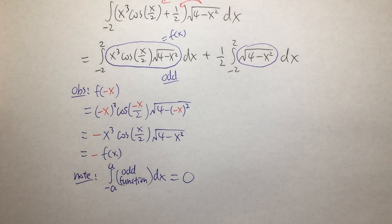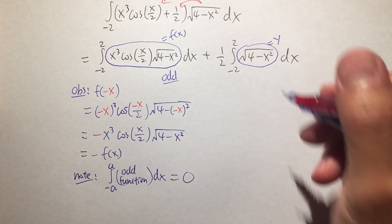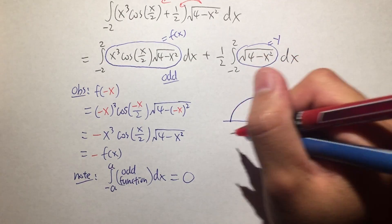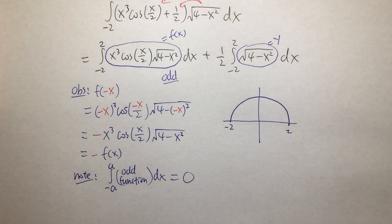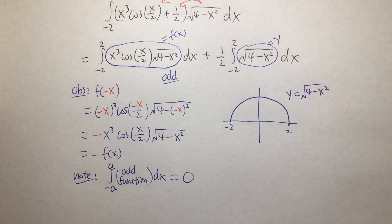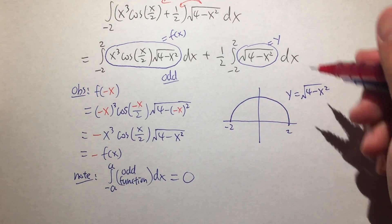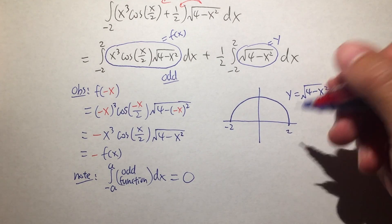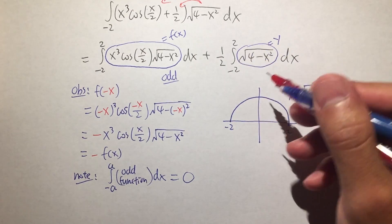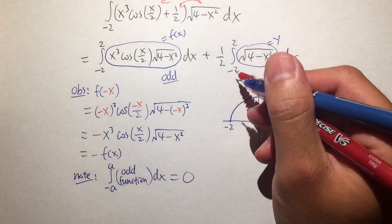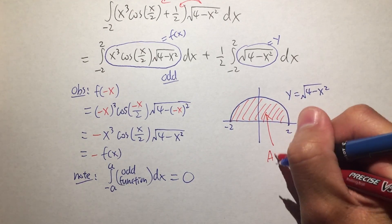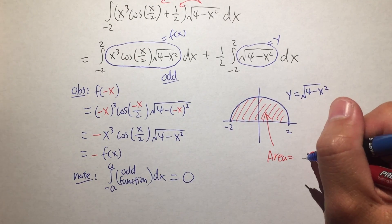For the second one, this is also pretty nice. If you say y equals the square root of 4 minus x squared and graph it, this is just a semicircle with radius 2, going from negative 2 to positive 2. You can verify: square both sides and move x squared over, giving x squared plus y squared equals 2 squared — a circle. So the integral from negative 2 to 2 of the square root of 4 minus x squared represents the area of that full semicircle.